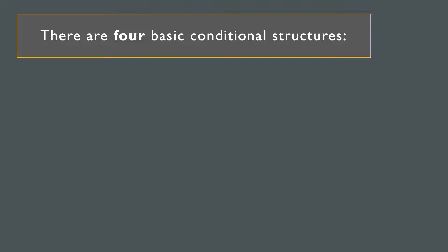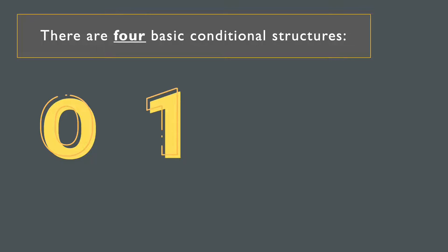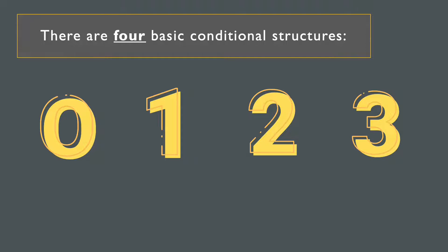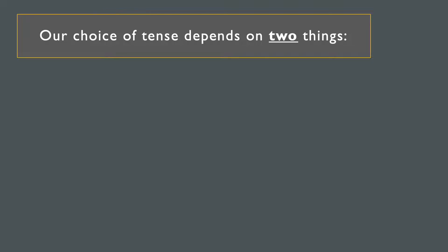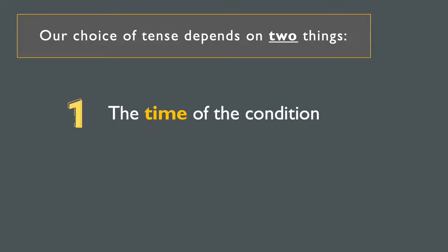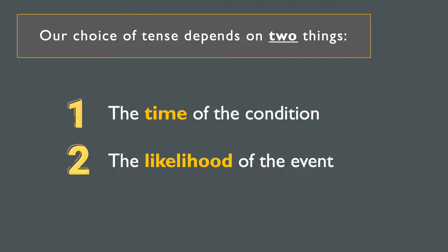As you might know, there are four basic conditional structures. We have the zero conditional, which is possible at any time but most commonly in the present. The first conditional, which is possible in the future. The second conditional, which is impossible in the present and possible but pretty improbable in the future. And the third conditional, which is impossible in the past. The tense we use in the conditional structure depends on two things: the time of the condition — whether it's in the past, present, or future — and the likelihood of the event, so how possible or impossible we think that event is.